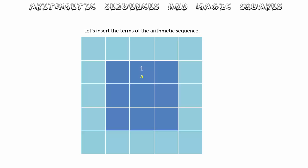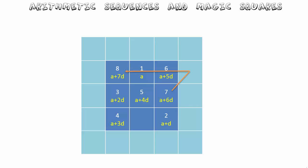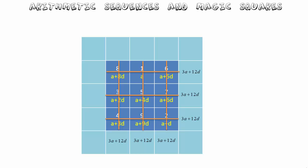Let's insert arithmetic sequence notation into our three by three magic square. We started with the number one — the first term a — in the middle of the first row. The number two becomes a plus d, and so on, placing every term in the sequence in terms of a and d. The magic sum obtained by summing any row, column or diagonal is 3a plus 12d. As a check, replacing a with one and d with one gives three plus twelve, which equals fifteen — as expected.